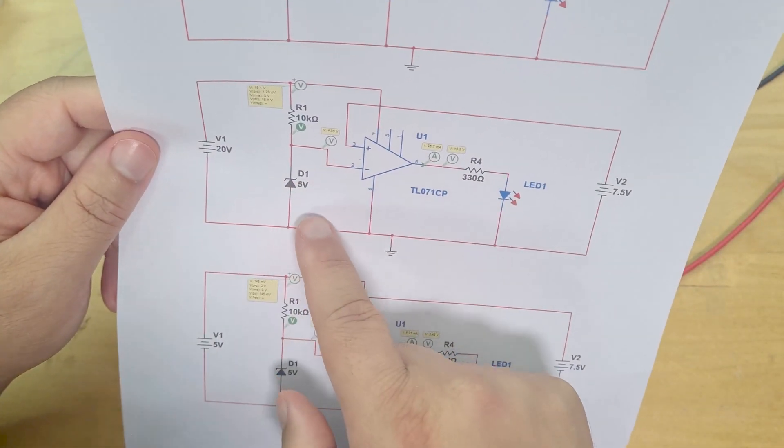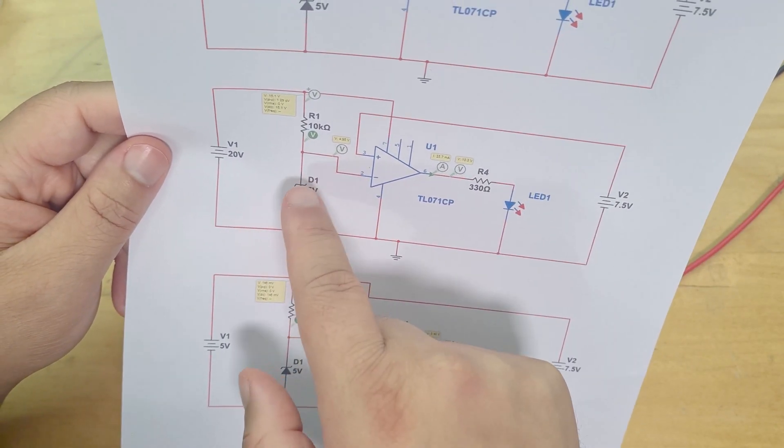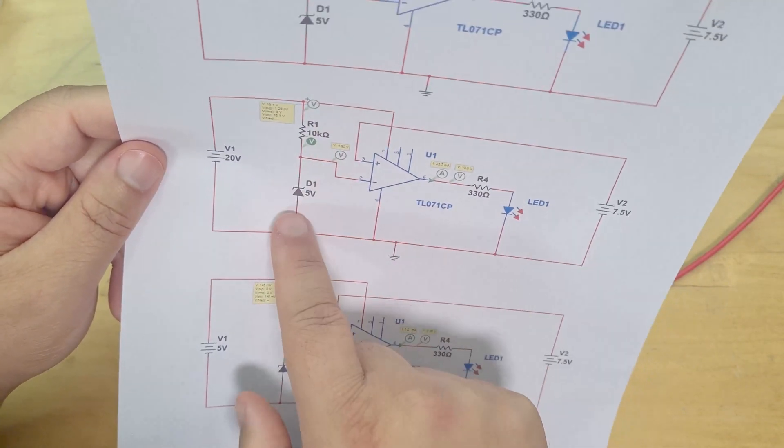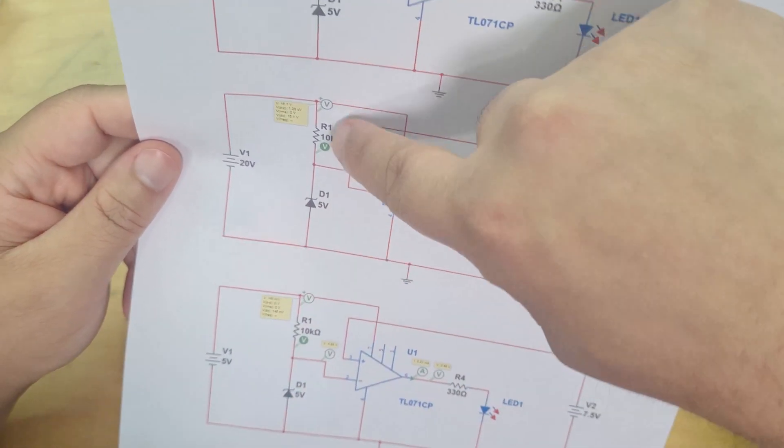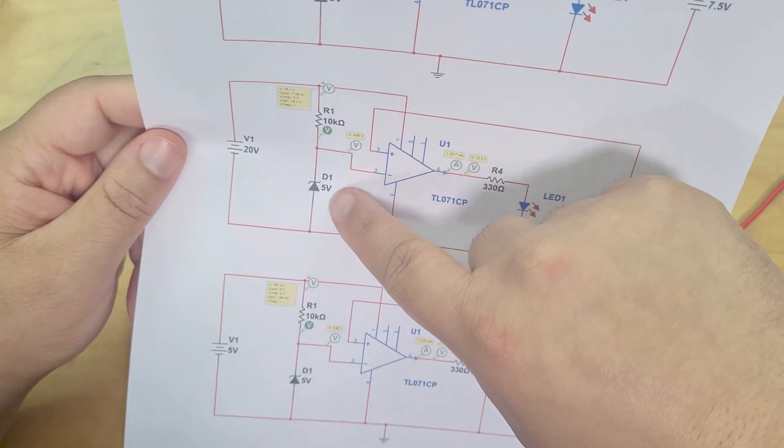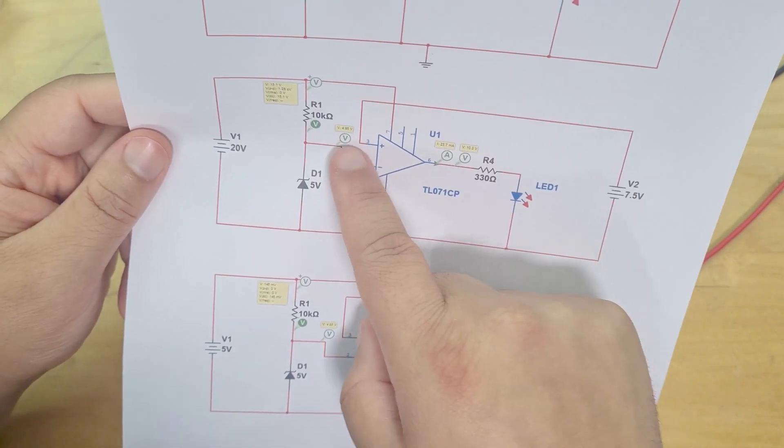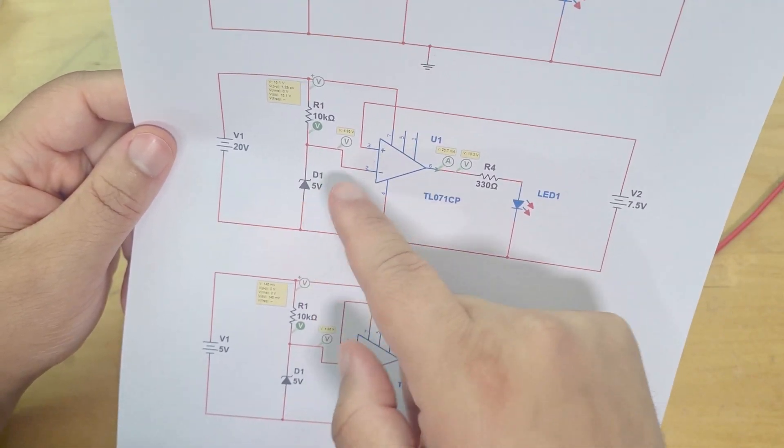We're just replacing the two resistors that we had which we were using as a voltage divider. We're just having that same R1 but this time sticking the Zener diode there, and then we get automatically a 5 volt reference or whatever voltage we use for the Zener diode.